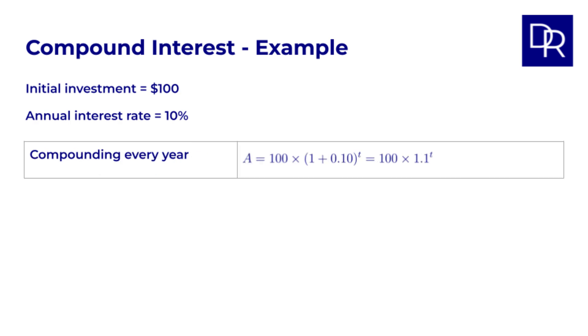Now, what if the interest is compounded twice a year, every six months? We start again with $100 and a rate of 10%. Then the formula becomes 100 times 1 plus 10% divided by 2, to the power of 2 times t. So here, we divide the annual rate of 10% by 2, because every six months, we just get half the 10%. And we multiply the number of years by 2, as we get interest paid twice per year.